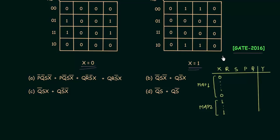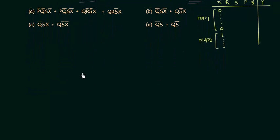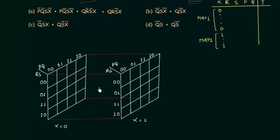Now I will draw the 3D view of the 5-variable kmap and then find the minimal SOP form. In the 3D view, corresponding cells in map 1 and map 2 have the same values of R, S, P, and Q — only X changes. For example, two corresponding cells have the same RSPQ values, but X is 0 in one and X is 1 in the other. If both cells contain 1, combining them eliminates X, giving R', S', P', Q'.